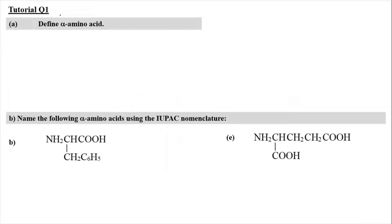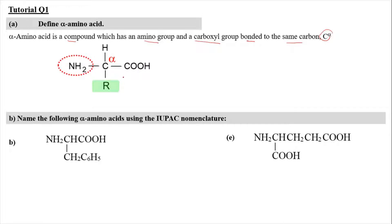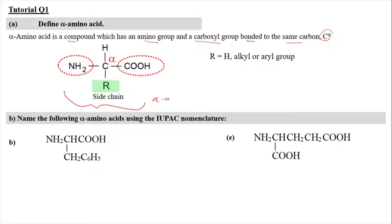For tutorial equation 1, we have to define alpha amino acid. Alpha amino acid basically means it is a compound which has an amino group and a carboxyl group bonded together on the same carbon, where that carbon is known as the alpha carbon. The R group is known as the side chain, where the side chain can be any hydrogen atom, alkyl group, or aryl group derivative. The whole structure is the alpha amino acid because it contains the alpha carbon.